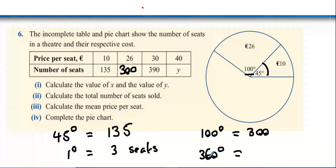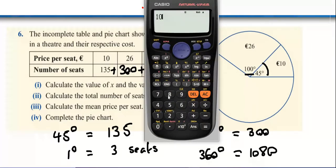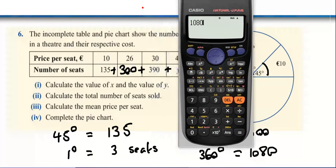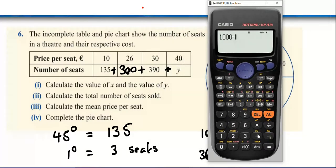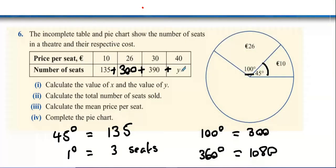Was anybody happy with 1080? So there's a thousand and 80 people. This means when I add 135 to 300 to 390 plus y, it has to equal a thousand and 80. I get my thousand and 80, and I just keep taking away the other numbers. I take away 135, I take away 300, I take away 390, and I get 255 people for the 40 seat.